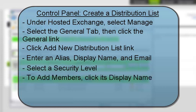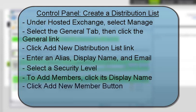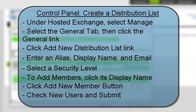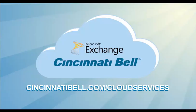To add members, begin by selecting the appropriate list by clicking its display name. On the Members tab, click the Add New Member button. From the list of available users, place a check mark beside all the users you want to include in the new distribution list and click Submit. Thank you for using Cincinnati Bell's Cloud Services.